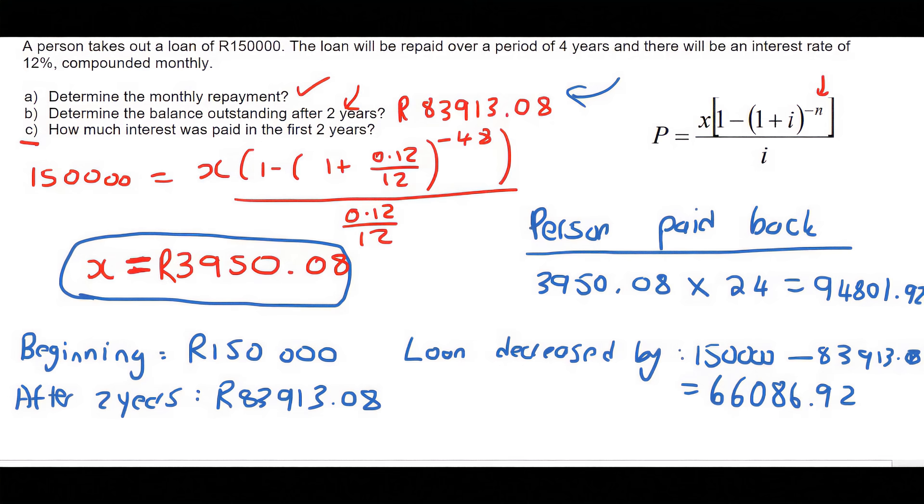Guys, now this part you need to understand. This person has physically paid back this amount of money from their bank or from their wallet. They paid back 94,000 Rand in a two-year period. However, their loan has only gone down by 66,000 Rand.